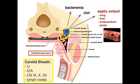The most common sites for septic emboli in Lemierre's are the lungs, the liver, the endocardium, and also joints.